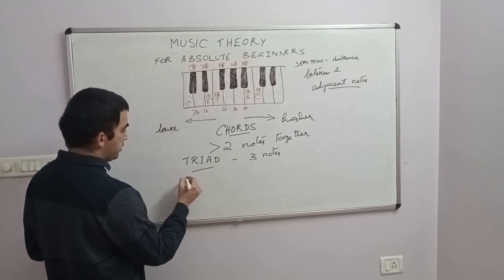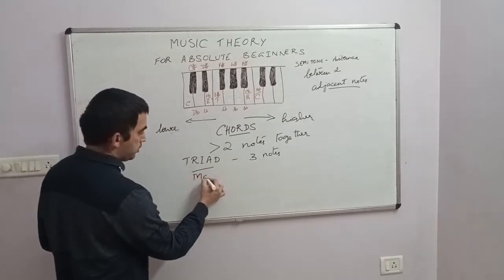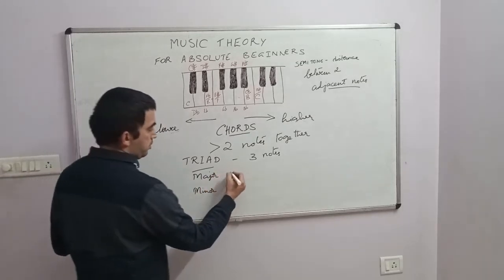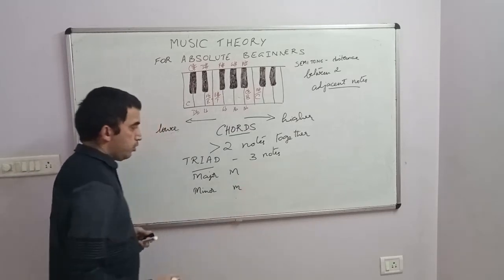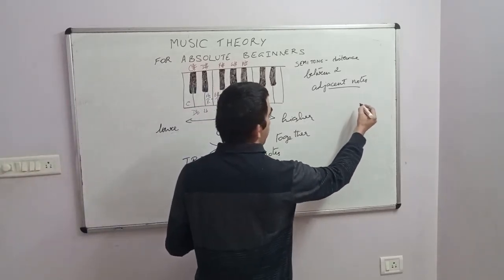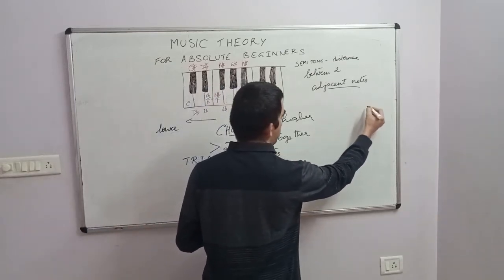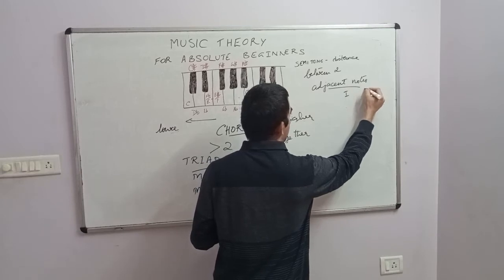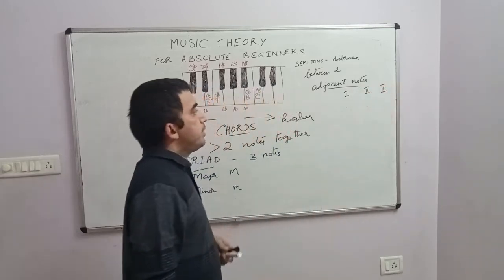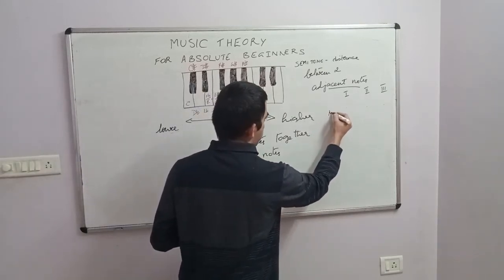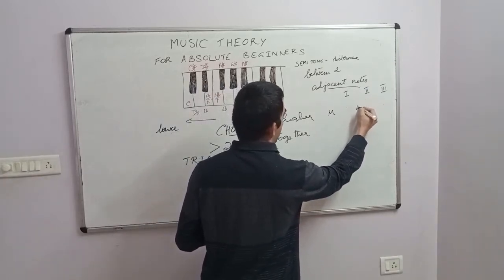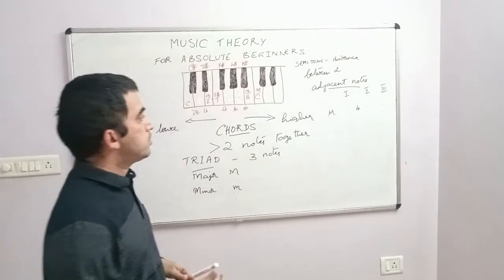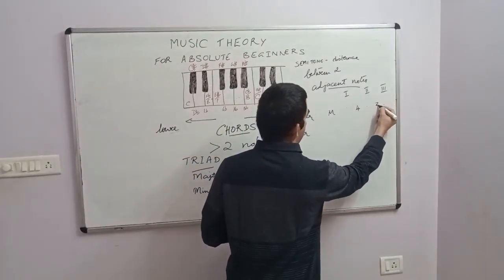When you start off, you learn the major chords and the minor chords. The major is designated as capital M and the minor as small m. When you have a triad, you have the first note, the second note, and the third note — so one, two, three. In a major chord, the distance between the first and the second note will be four semitones. A semitone is the distance between two adjacent notes. The distance between the second and the third note will be three semitones.